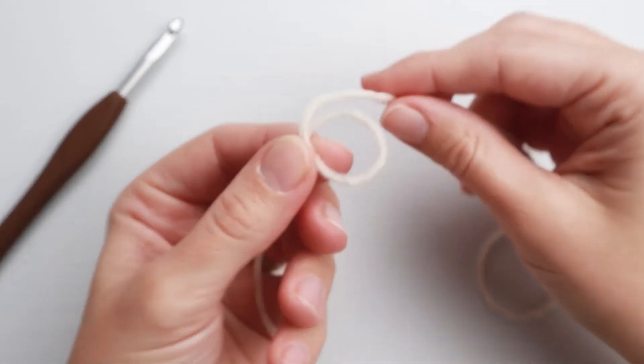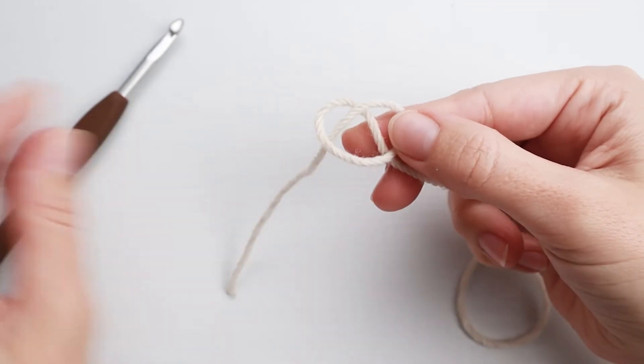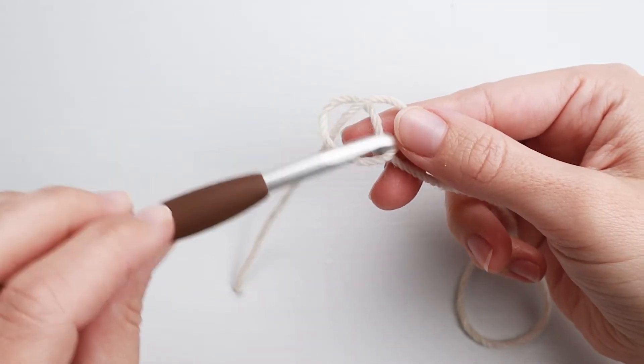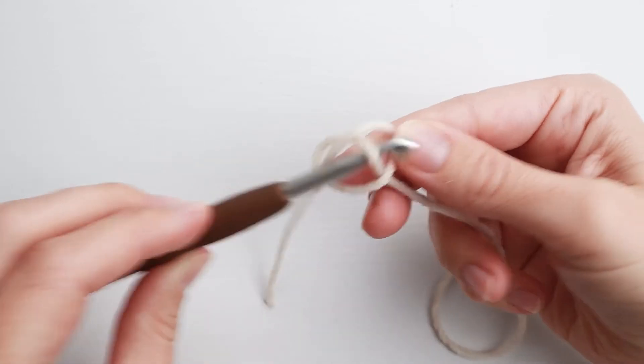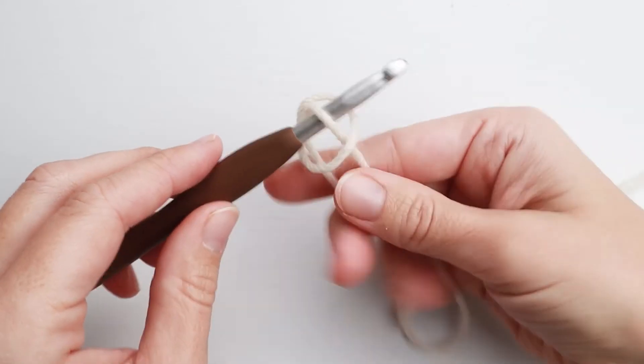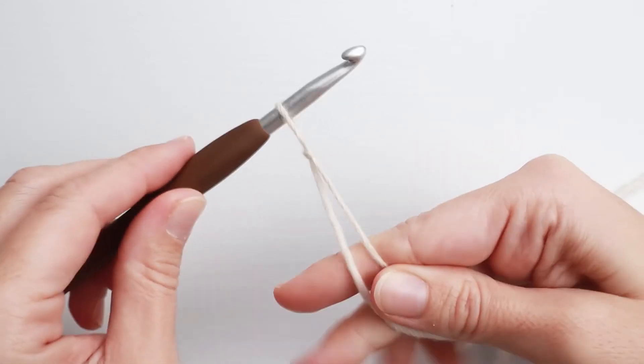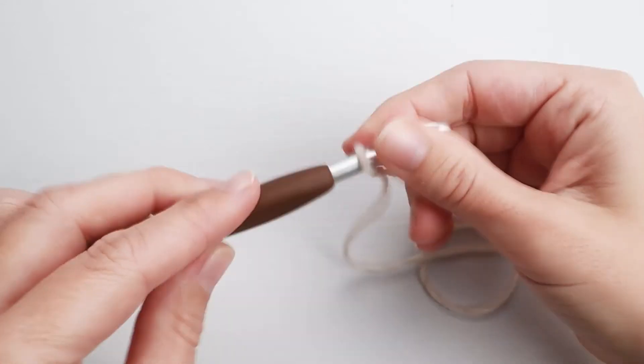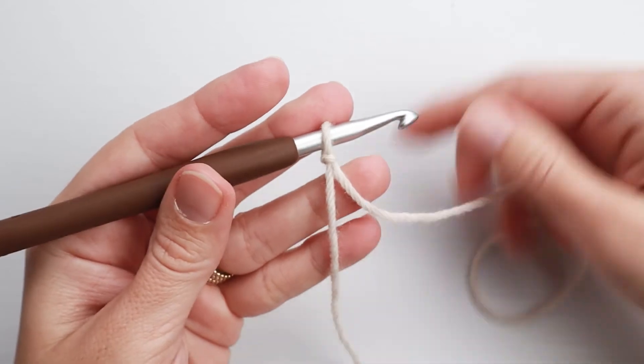Then I let it go underneath the loop and I grab that thread that goes underneath the loop with my hook. Then I hold the ends here and I tighten the knot. And now I'm ready to crochet.